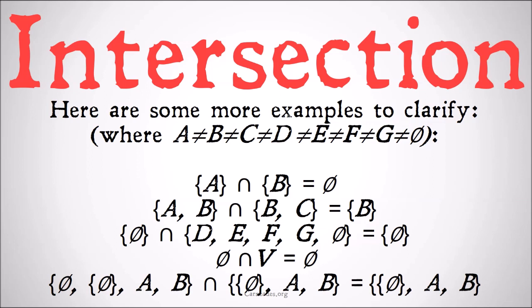And for something a little more complicated, the intersection of {∅, A, B} and {{∅}, A, B} is simply equal to {A, B}.